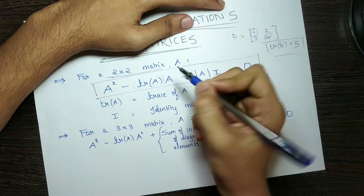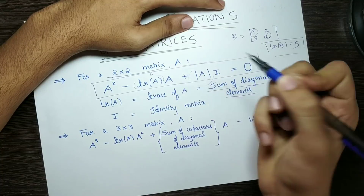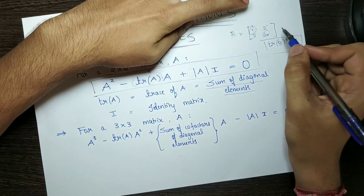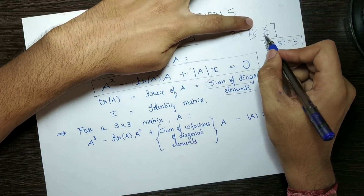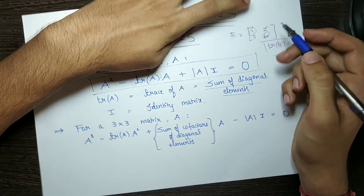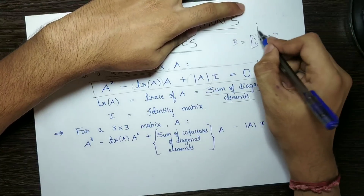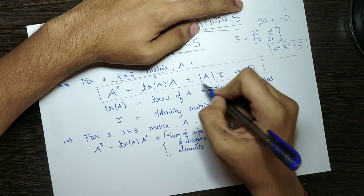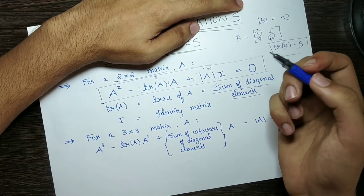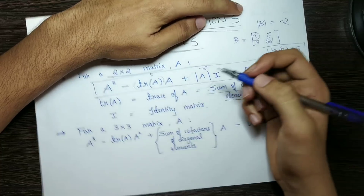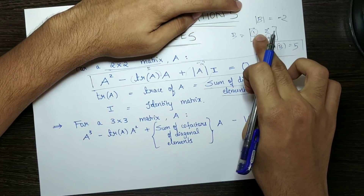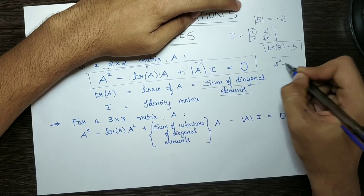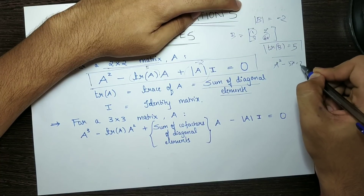If you substitute this, you have 5. Determinant of A is 1 into 4 minus 2 into 3, which is 4 minus 6, equal to minus 2. So determinant of A equals minus 2. Now substitute minus 2 into the identity term. You think about this matrix: A squared minus 5A.